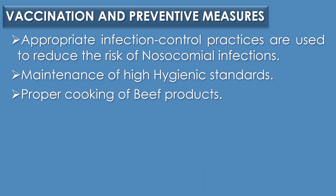Finally, vaccination and preventive measures. The first preventive measure is that appropriate infection control practices are used to reduce the risk of nosocomial infection — for example, restricting use of antibiotics and avoiding unnecessary use of urinary tract catheters. The second preventive measure is maintenance of high hygienic standards to reduce the risk of exposure to dangerous or pathogenic strains. The final preventive measure is proper cooking of beef products to reduce the risk of E. coli infections.